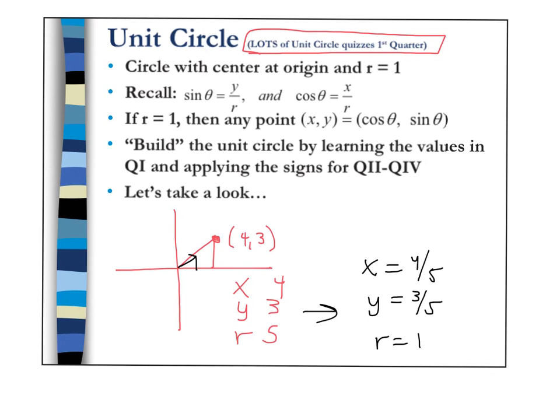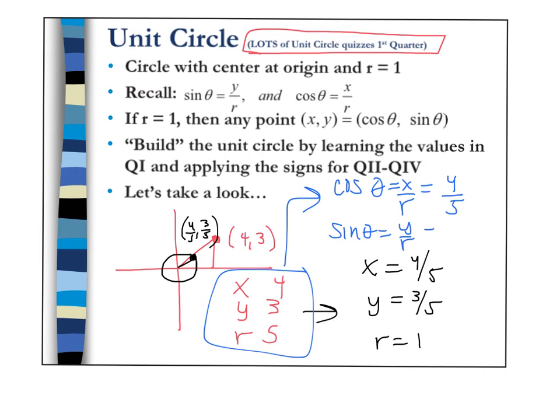This would give us a point on what we call our unit circle. Our unit circle is a circle with the center at the origin and the r value equal to 1. Now if we look at any point on this circle, that ordered pair would equal (4/5, 3/5). If we were to find the cosine, which is x over r, that would equal 4/5, and the sine ratio, which is y over r, would equal 3/5. Hey, what do you know? The cosine ratio of the original point equals the x value of the scaled point.